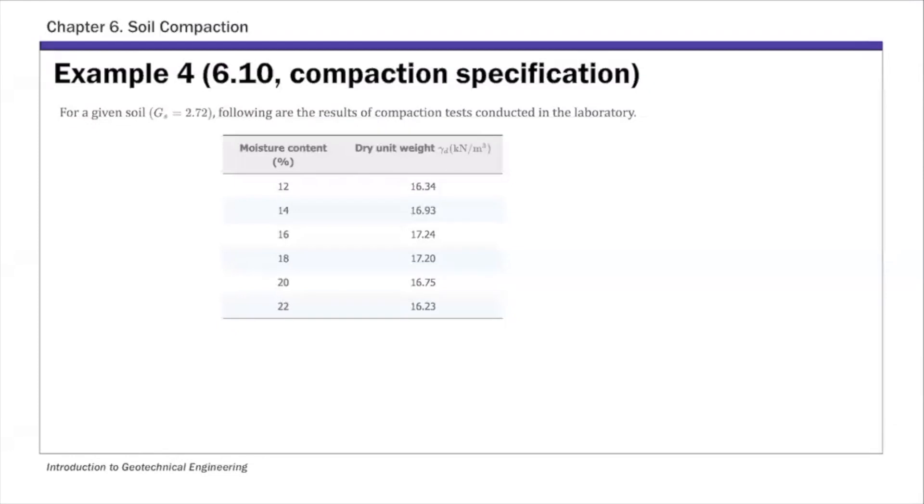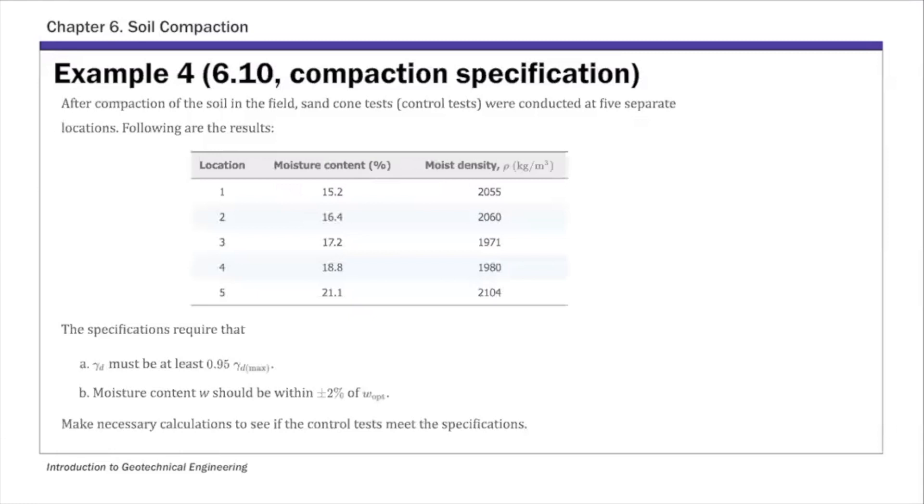And for this example, we are given compaction test results. So this is compaction test from the lab. And then we are also given these five field unit weights. So we have one, two, three, four, five. So these are basically in-situ or field unit weight from sand cone tests. So we're given directly these field test results.